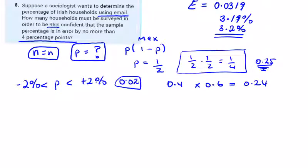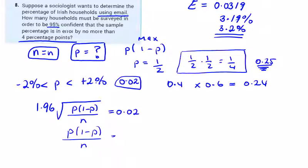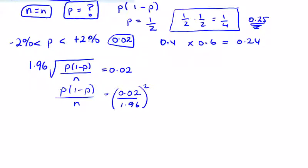So let's just fill in what we know into the formula. We know that 1.96 times the square root of p times 1 minus p over n has to be equal to 0.02. So p times 1 minus p over n is equal to 0.02 over 1.96, and then squared to get rid of the square root. So I can say that p times 1 minus p over n is equal to a really small number, 0.000104123.